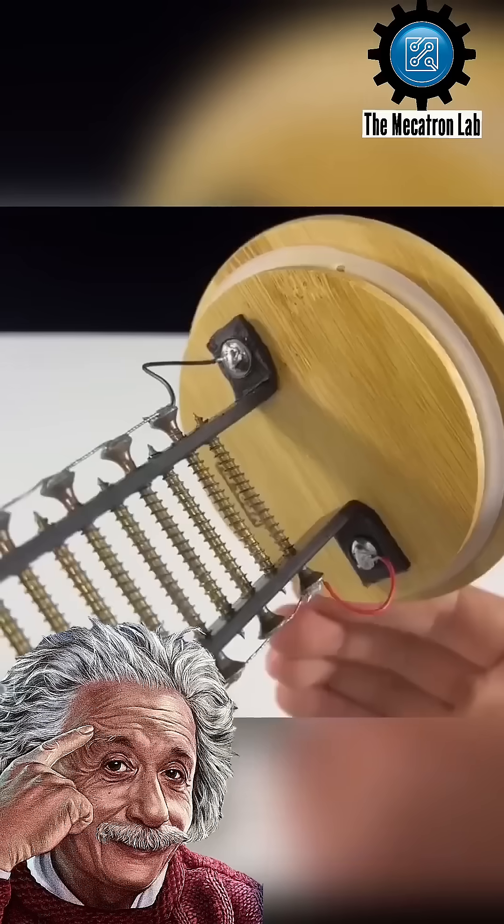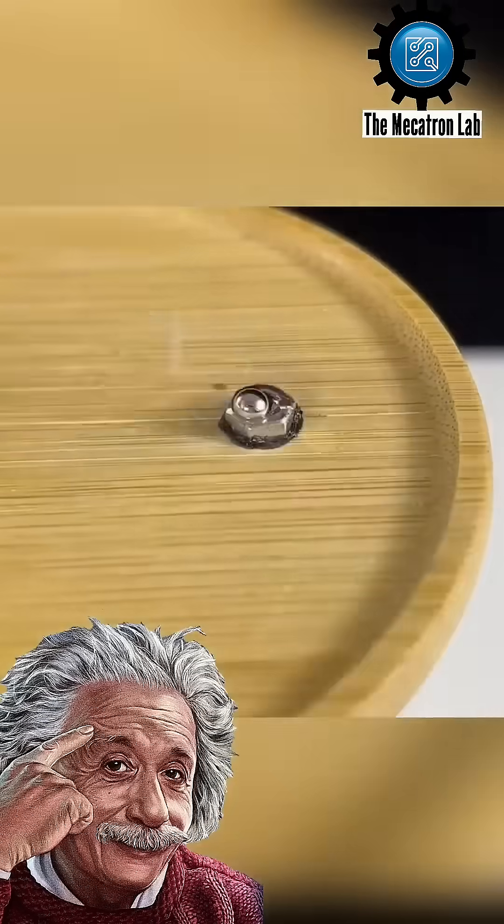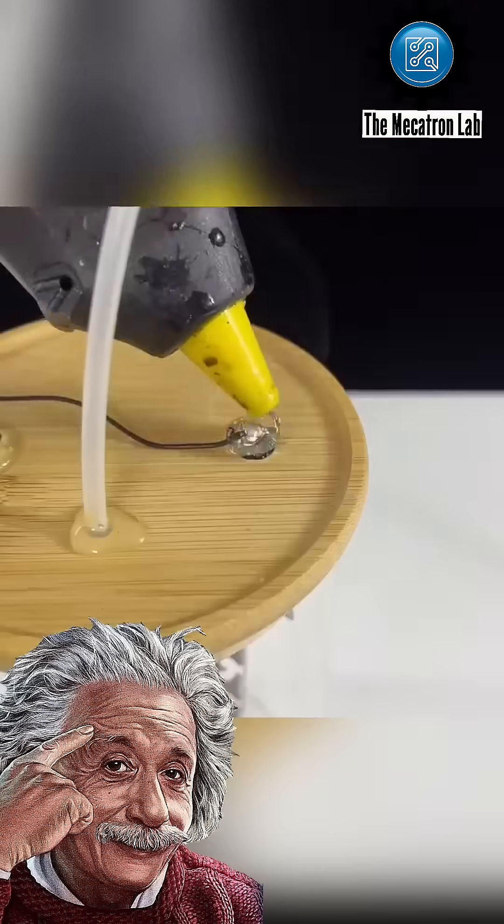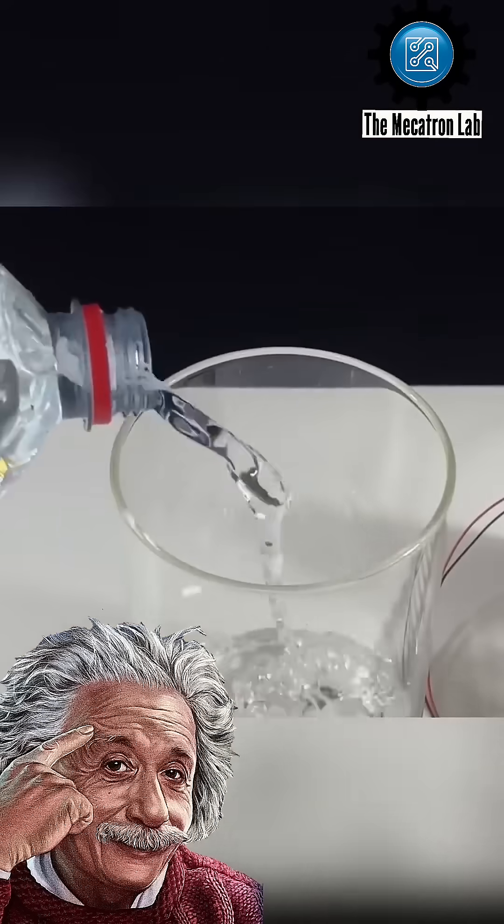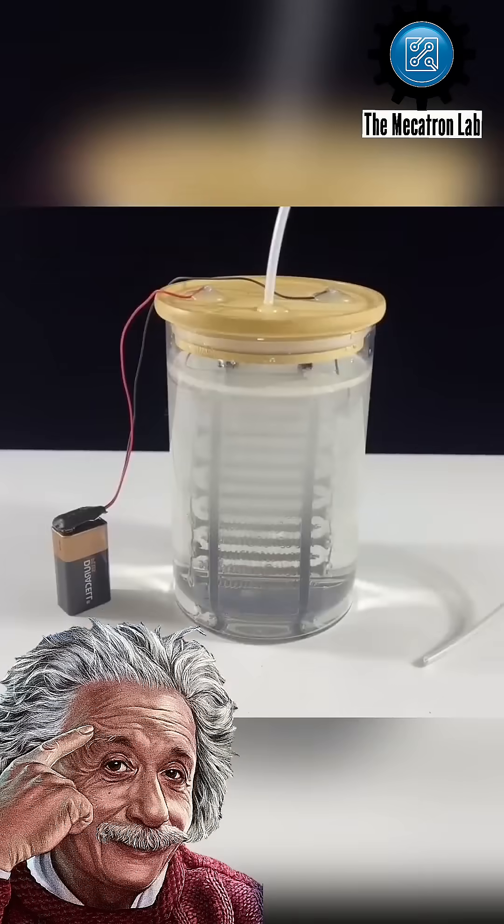He then attaches this screw system, shaped like a ladder, to the jar lid and seals it tightly. After meticulous setup, he powers the system with electricity, and small bubbles begin to form. A clear sign of water splitting into hydrogen gas, a highly flammable fuel.